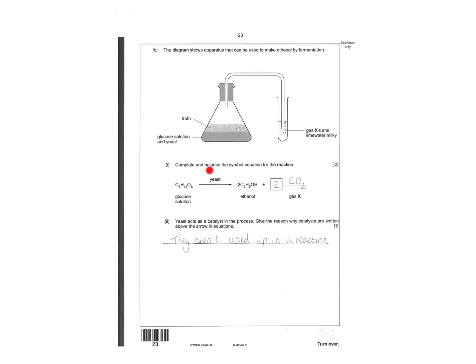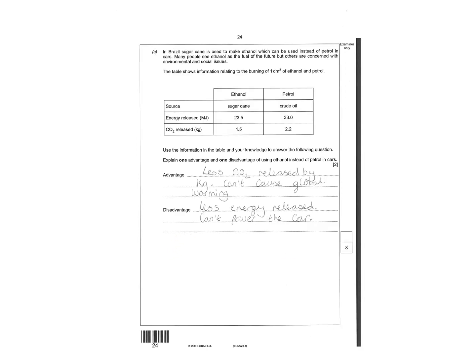Complete and balance the symbol equation for the reaction. Every time you produce glucose with yeast that's going to be CO2. Yeast acts as catalyst in the process. Give a reason why catalysts are written above the arrows in the equation - they aren't used up in the reaction. Explain one advantage one disadvantage of using ethanol instead of petrol in cars. Less CO2 released per kg can't cause global warming. Disadvantage - less energy released that can't power the car.